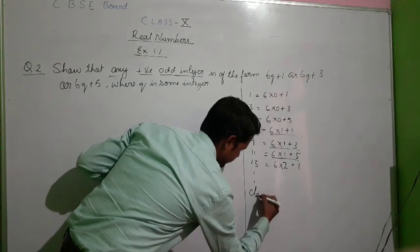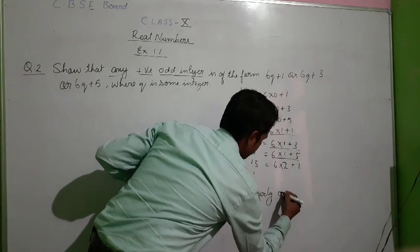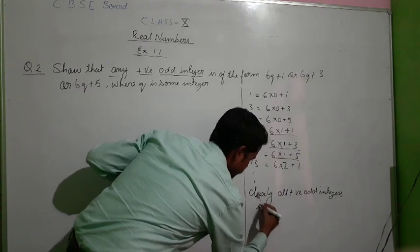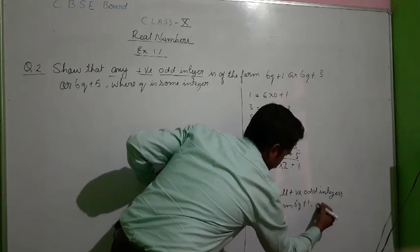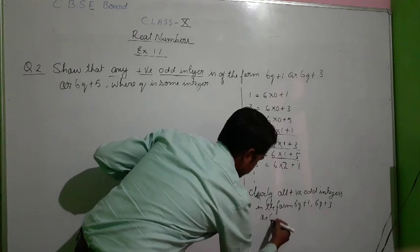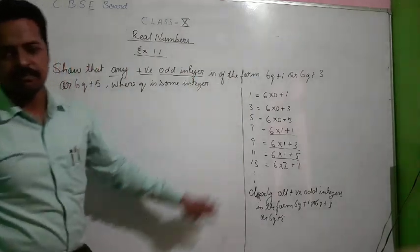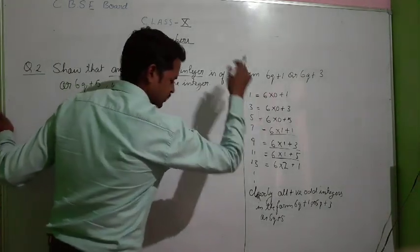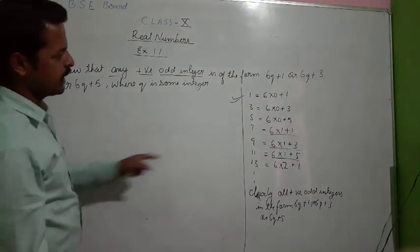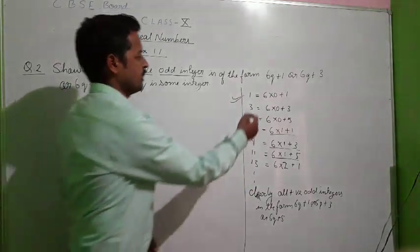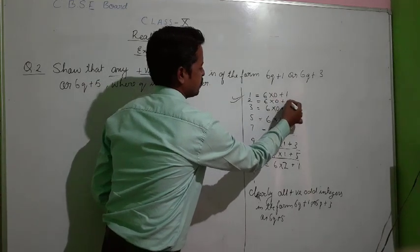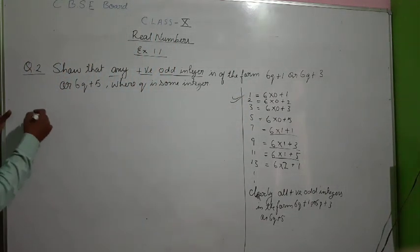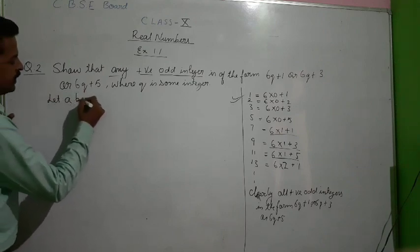So after this we can clearly write: we can represent all positive odd integers in the form 6q+1, 6q+3, or 6q+5. This is one method of solving, and this way is also correct. If you solve in this manner, nobody can cancel it — it is correct because we have clearly shown that every odd integer is in one of these forms. For example, if you take r=2, you get 6×0+2=2, which is an even number, so this rule applies for even numbers differently. Now let us look at another method.